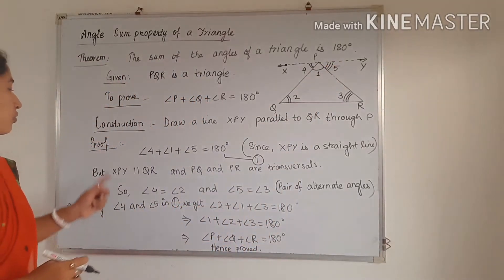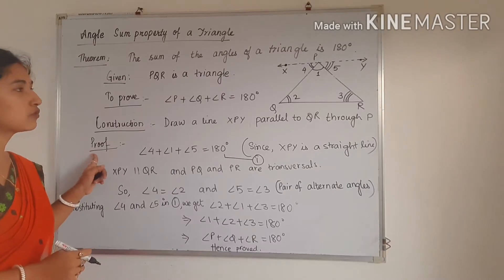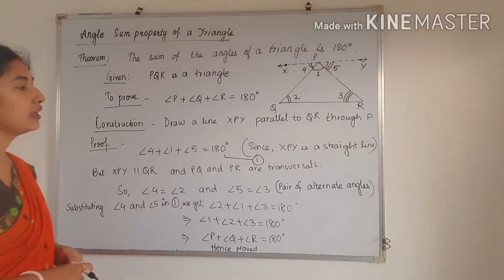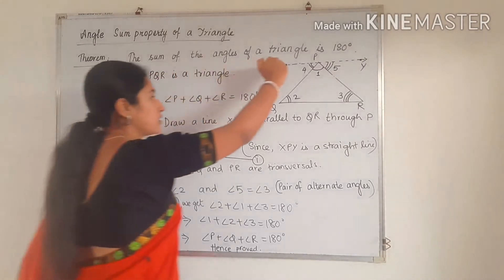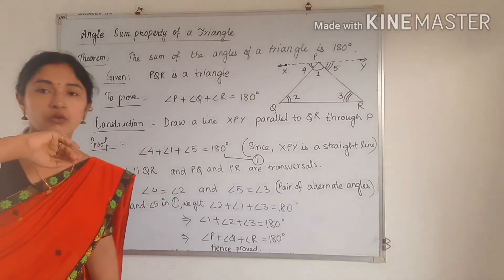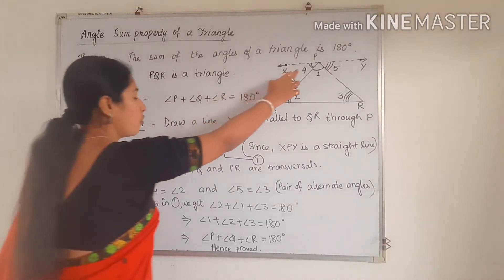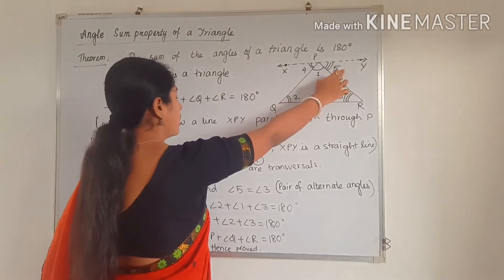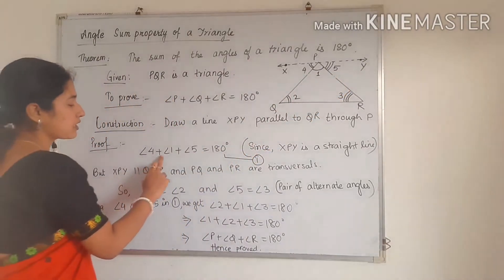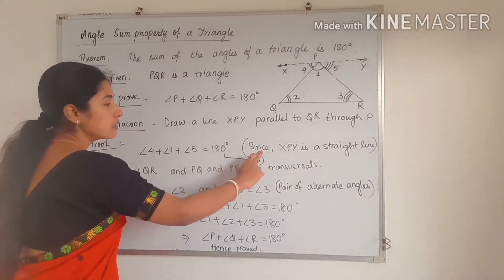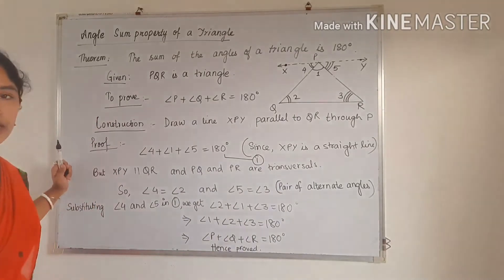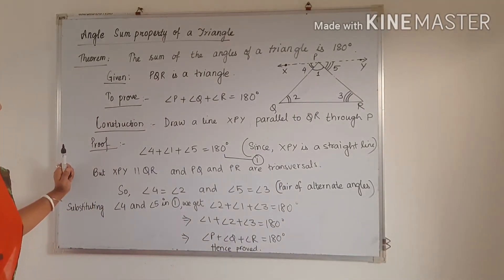Now we will start the proof. From the diagram we can see that XPY is a straight line. A straight line makes an angle of 180 degrees. So we can write angle 4 plus angle 1 plus angle 5 is equal to 180 degrees. This is the first line — angle 4 plus angle 1 plus angle 5 equals 180 degrees — since XPY is a straight line forming a straight angle.